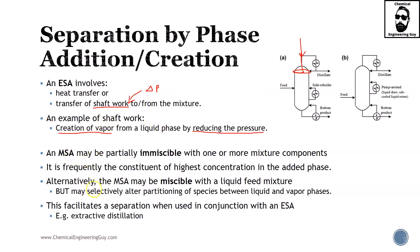An MSA may be partially immiscible with one or more mixture components or must be separable in a certain manner, for instance in distillation. It is frequently the constituent of highest concentration in the added phase. In extractive distillation, the entrainer will be much higher than the actual liquid or vapor that we are going to separate. Alternatively, the MSA may be miscible with a liquid feed mixture, but you will need to eventually separate it. In this case, it may selectively alter partitioning species between liquid and vapor phase, which facilitates separation such as in extractive distillation.